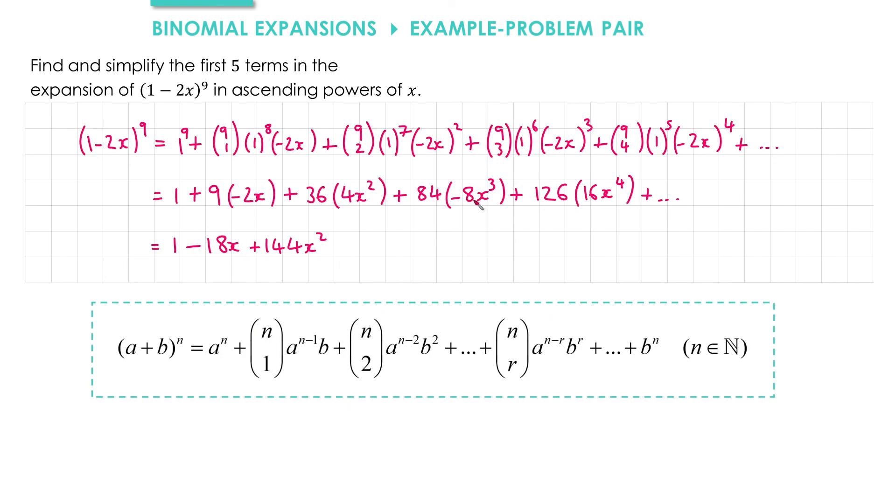We've got 84 times negative 8x cubed gives us negative 672x cubed. And we've got 126 times 16 gives us 2016x to the power of 4.